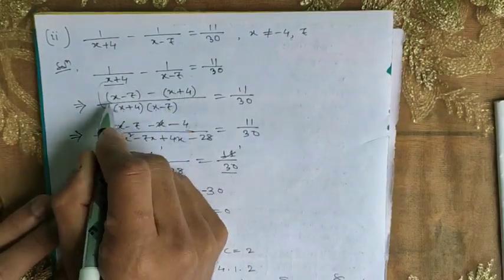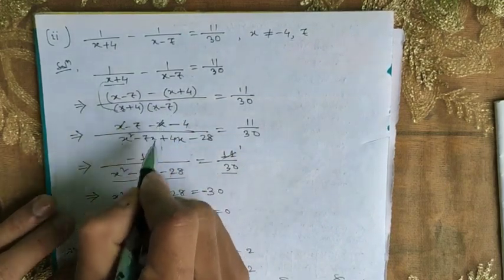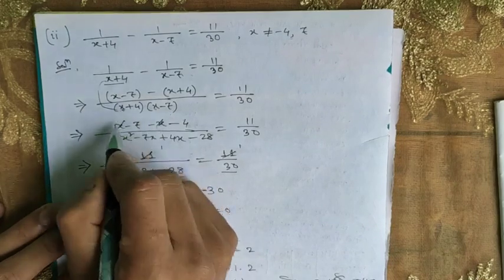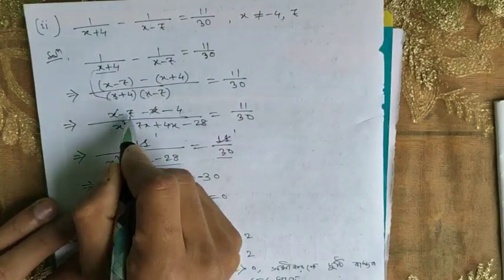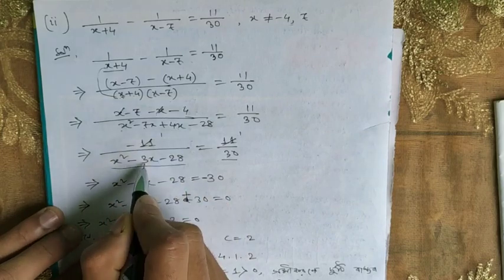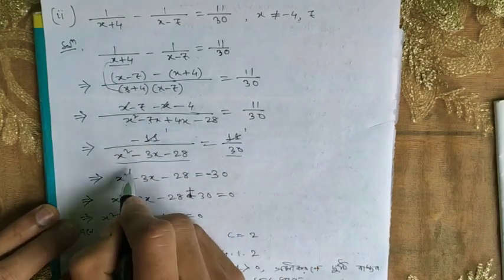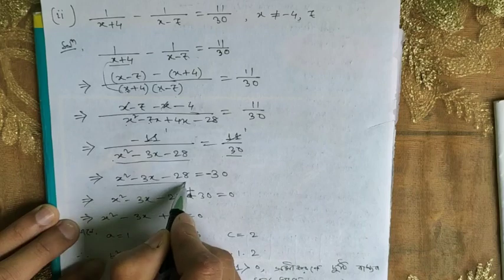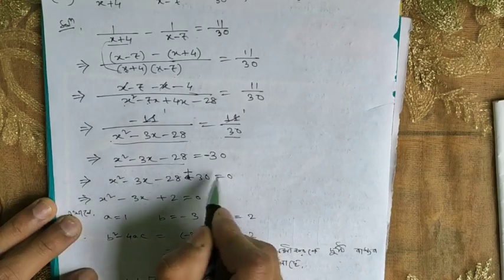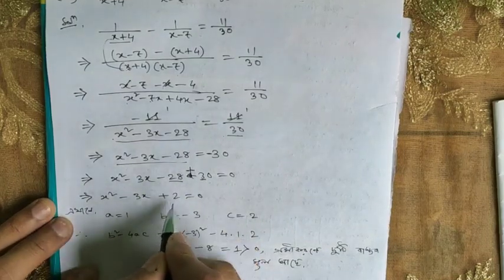We get x squared minus 28 equal to 11 by 30. The x terms cancel: minus 7 minus 4 gives minus 11. So we have x squared minus 7x plus 4x minus 28, which simplifies to x squared minus 3x minus 28 equal to 11 by 30. Cross-multiplying and cancelling, we get x squared minus 3x minus 28 minus 30 equals 0, giving x squared minus 3x minus 58 equal to 0.